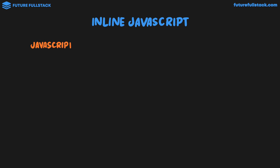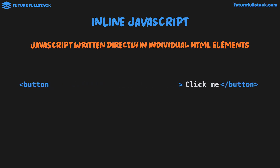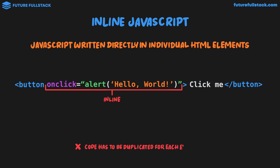Inline JavaScript is when JavaScript is written directly in individual HTML elements. We have a button with the text 'click me', and inside the button we add an attribute like onclick with a piece of JavaScript. I don't want you to worry about any of the syntax — all I want you to understand is how JavaScript is included through these different methods. This method is not good because the code has to be duplicated for each element.